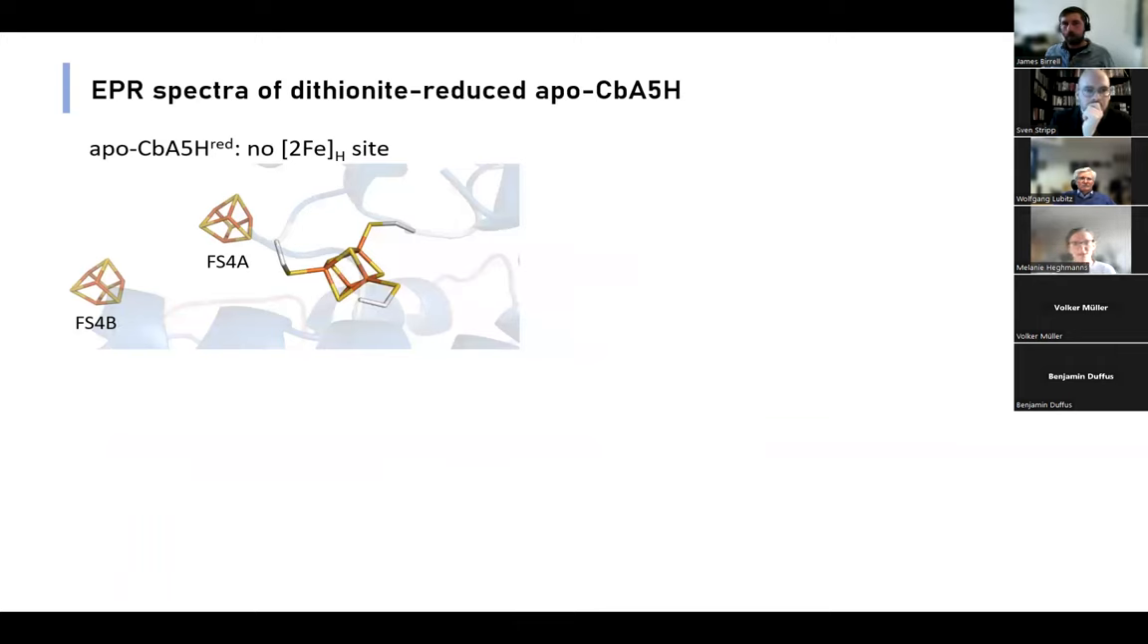We first characterized this enzyme by looking at the apo enzyme in the dithionite-reduced state, where we have two 4Fe-4S clusters and the cubane of the H-cluster. The resulting rhombic spectrum is very characteristic for 4Fe-4S clusters. At two different frequencies, we see significant line shape changes due to strong exchange coupling between the clusters, which is not surprising as they are very close.